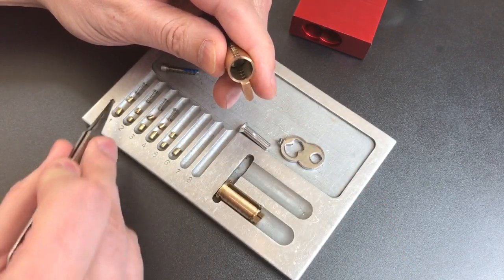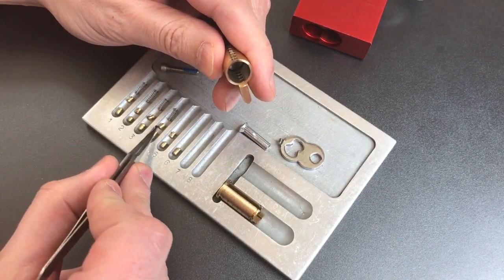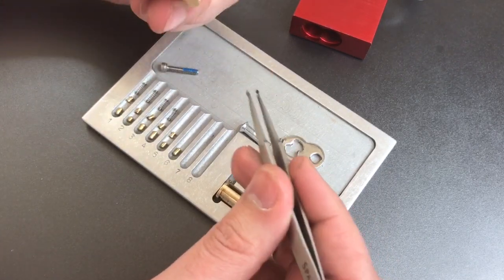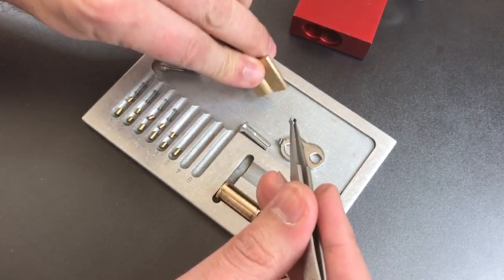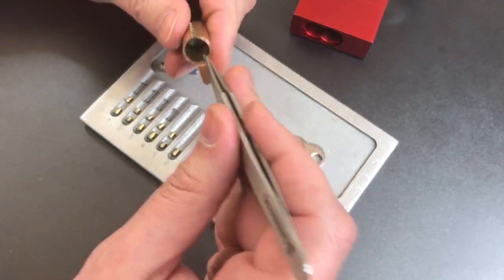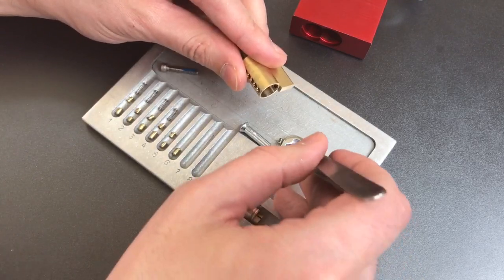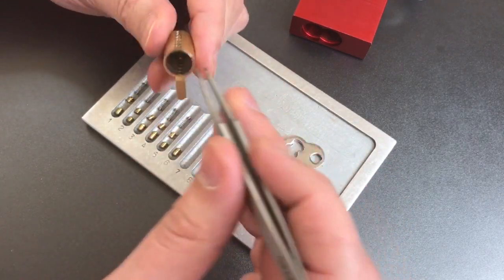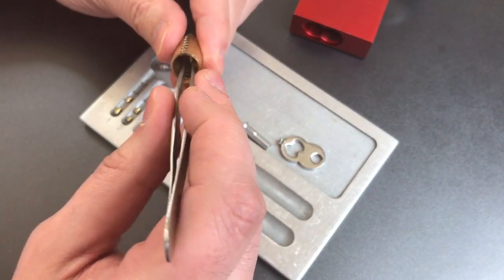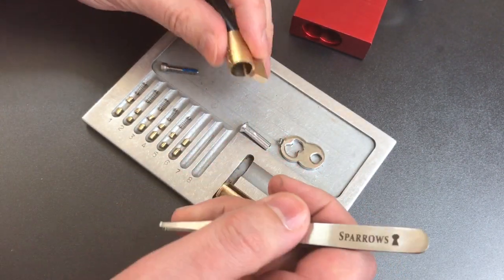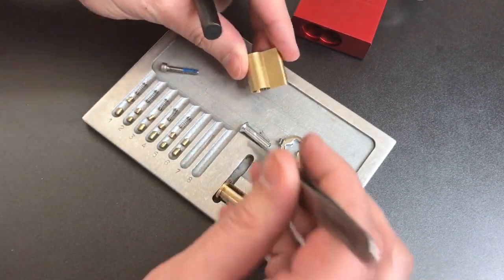Okay, so far we have spool, serrated, spool, serrated, spool. And the spring on slot five doesn't seem to want to come out. There we go.